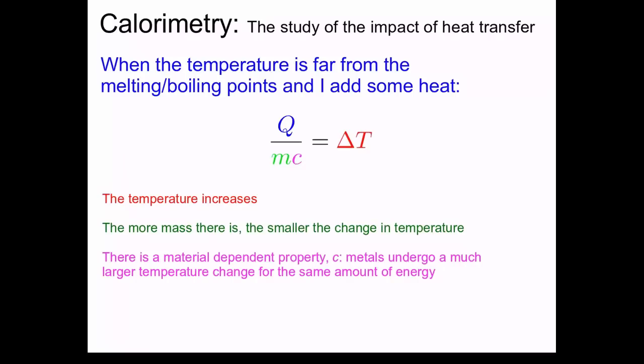There's also going to be a material dependent property, which we label with a little case c. Metals, for example, undergo a much larger temperature change for the same amount of energy. Typically, this expression is written in a slightly different form. Usually, it's written Q equals mc delta T.